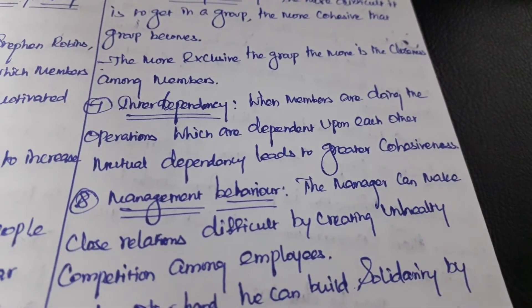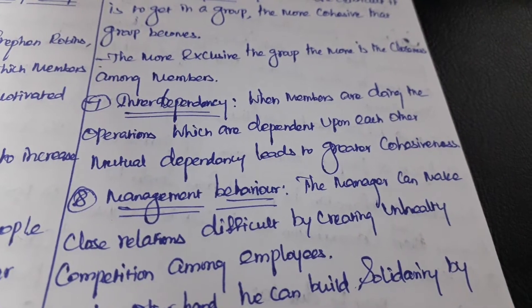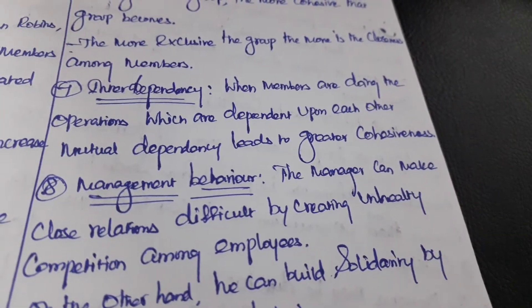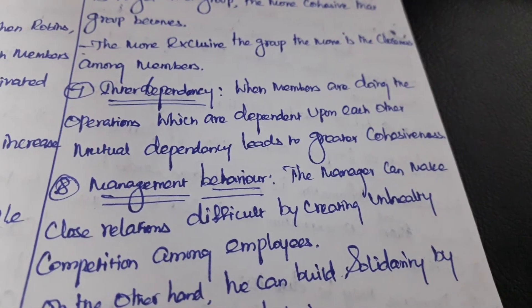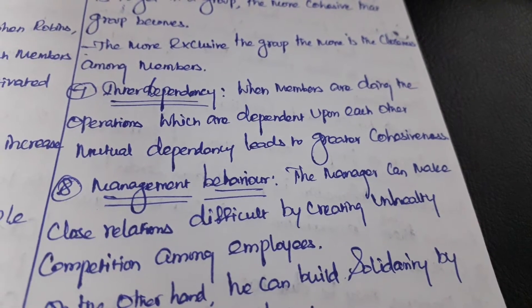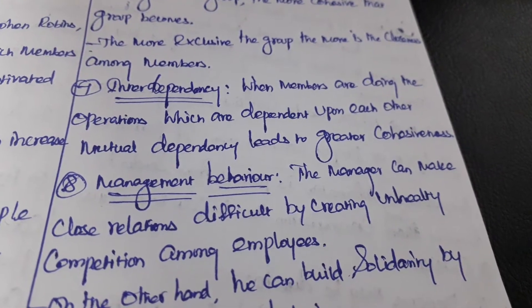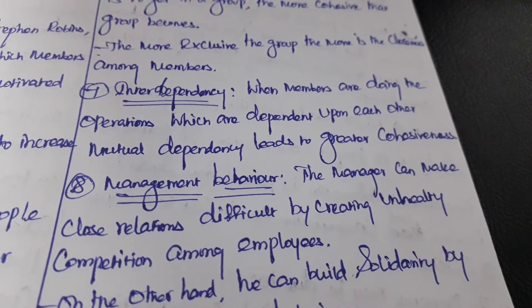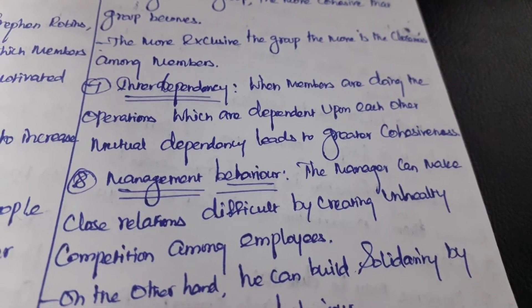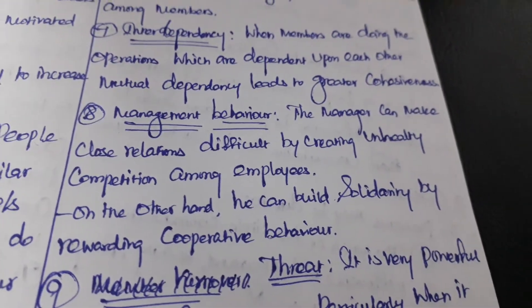The next factor is interdependency, where members are performing operations that are dependent upon each other. Mutual dependency leads to greater cohesiveness. Members are specialized in specific areas and are therefore dependent on each other, through which group cohesiveness will be increased.